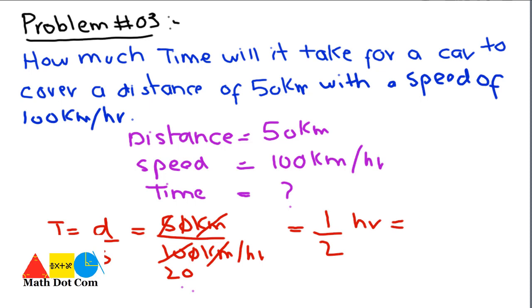So the time required for a car to cover a distance of 50 km at a speed of 100 km/hour is 0.5 hours, which means in half an hour the car will be able to cover a distance of 50 km. This is how you can solve problems that deal with distance, speed, or time. Thank you.